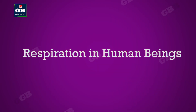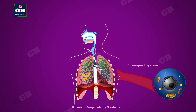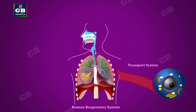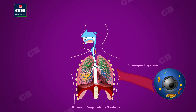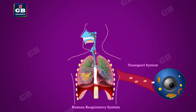Respiration in human beings. Breathing is an essential part of respiration. It allows organisms to obtain oxygen from the surrounding. Human beings have a well-developed respiratory system to absorb oxygen from the atmosphere. Let's see the structural and functional details of each part of it.